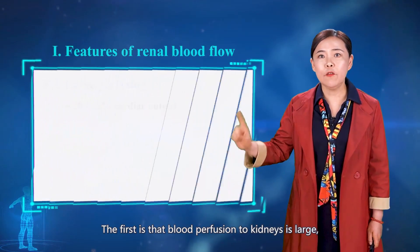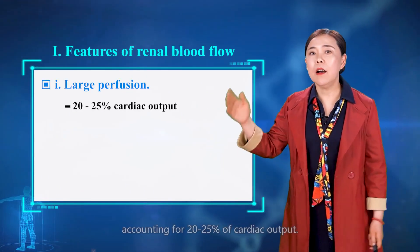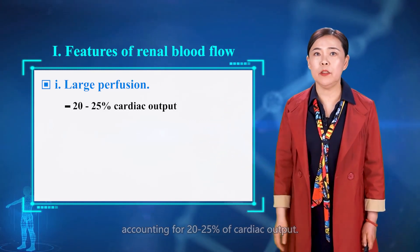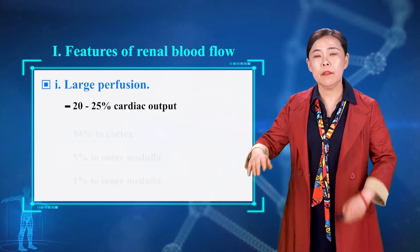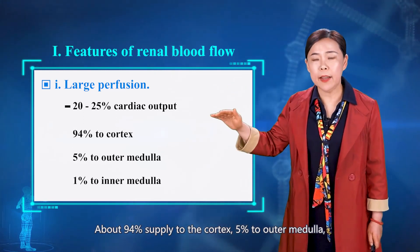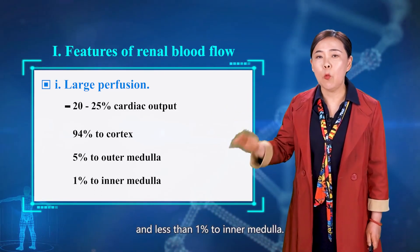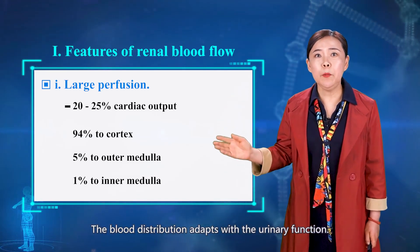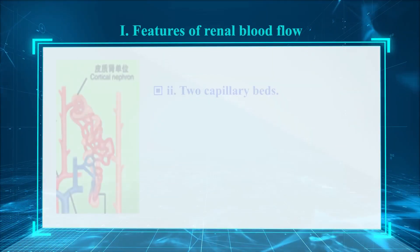The first feature is that blood perfusion to the kidney is large, accounting for 20 to 25 percent of cardiac output. The blood supply in different parts is uneven: about 94 percent is supplied to the cortex, 5 percent to the outer medulla, and less than 1 percent to the inner medulla. This blood distribution adapts with the urinary function.